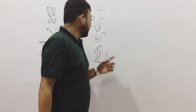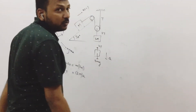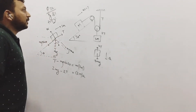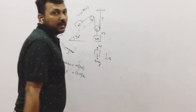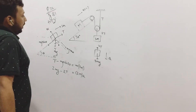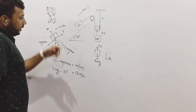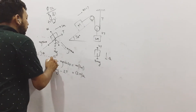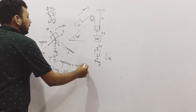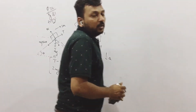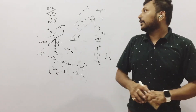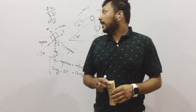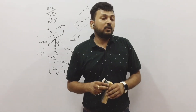So the tension is 2T and the acceleration is A; for M the acceleration is 2A. We must remember this. Applying Newton's second law: T minus MG sin theta equals M times A, and 2MG minus 2T equals 2M times A. There are two equations — you know how to solve simultaneous equations from class 9 and 10. Solving these gives you the acceleration of the mass asked in the question.